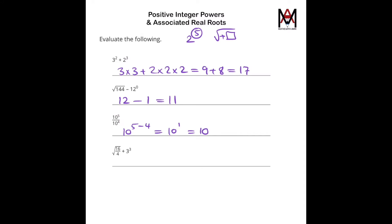If they were being multiplied together, so if it was 10 to the power of 5 times by 10 to the power of 4, then we would have added the powers.